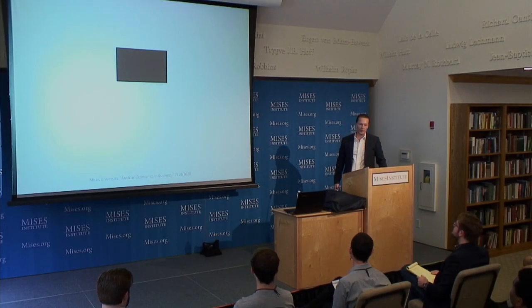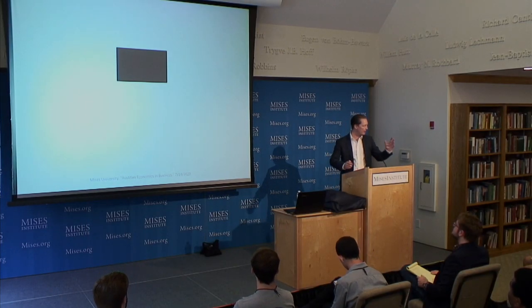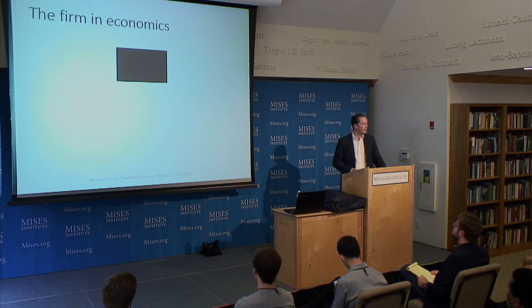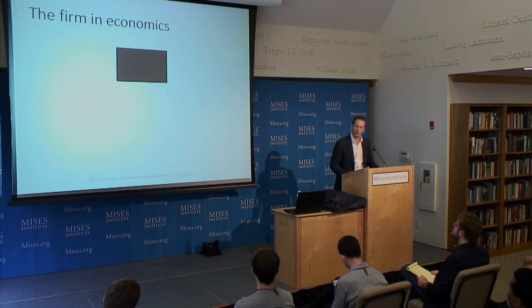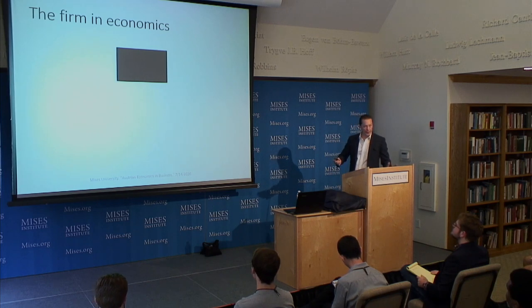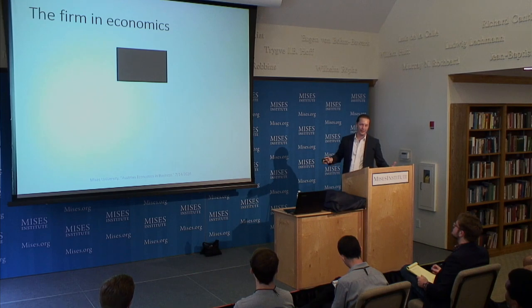Let's start with the theory. What is this? It's a black box — this is actually the firm. And as you listened to Dr. Klein in the previous lecture talking about the firm and competition and monopoly, this is pretty much how regular mainstream economics sees the firm. It's a black box. What the heck is going on in that black box? Well, who cares? That's their answer. We don't really know, and it's not really economics anyway.